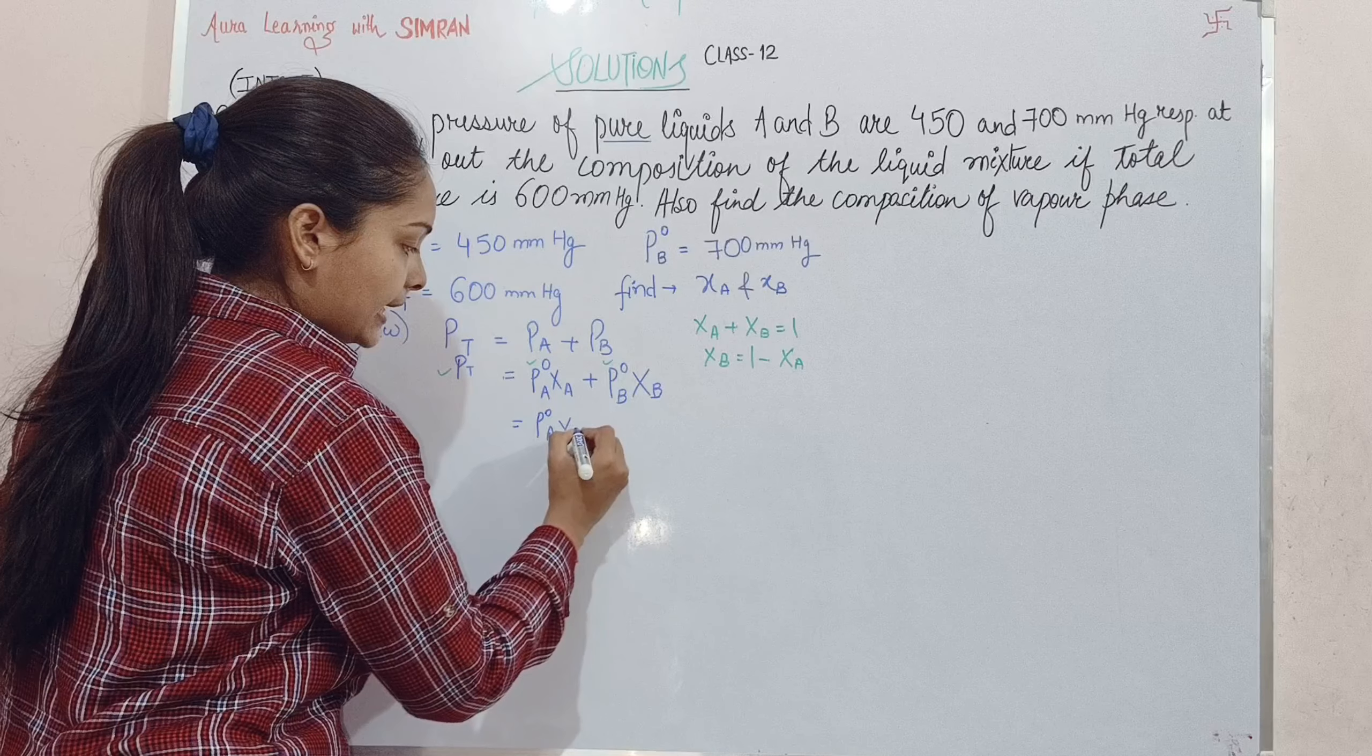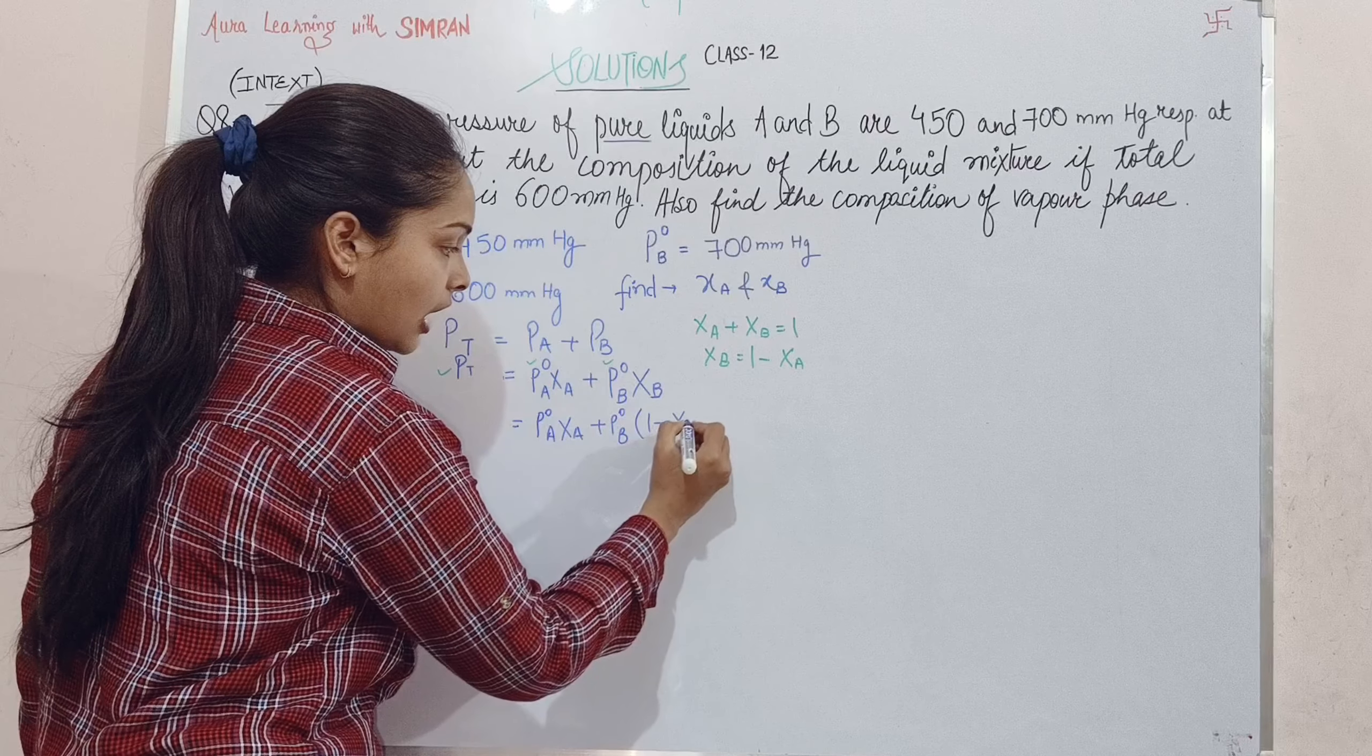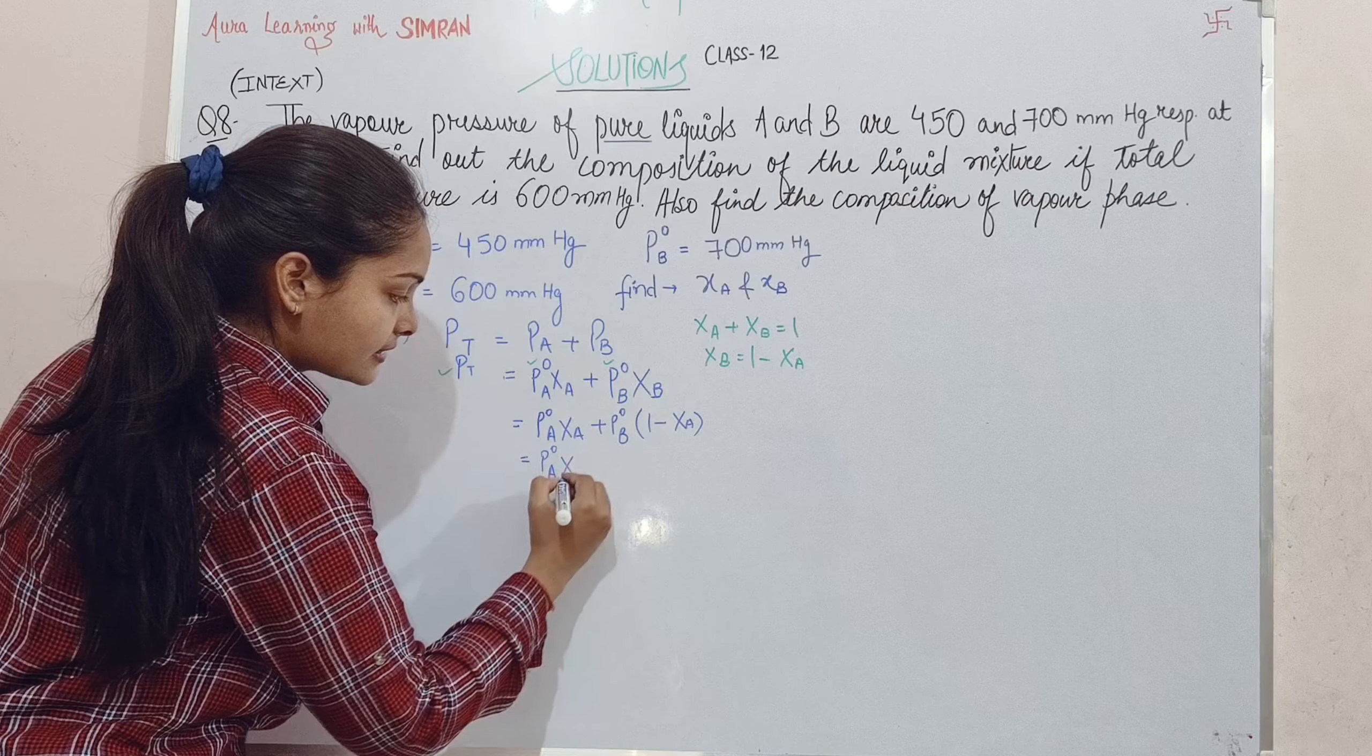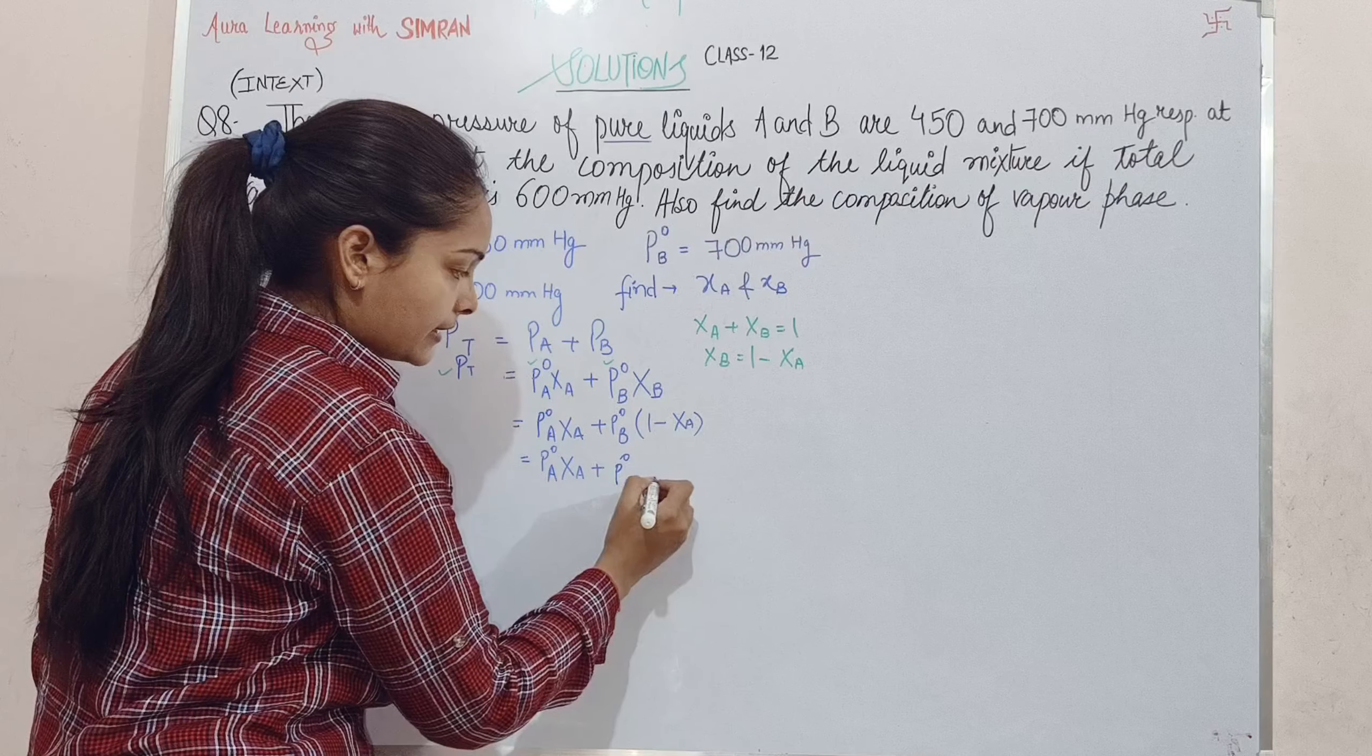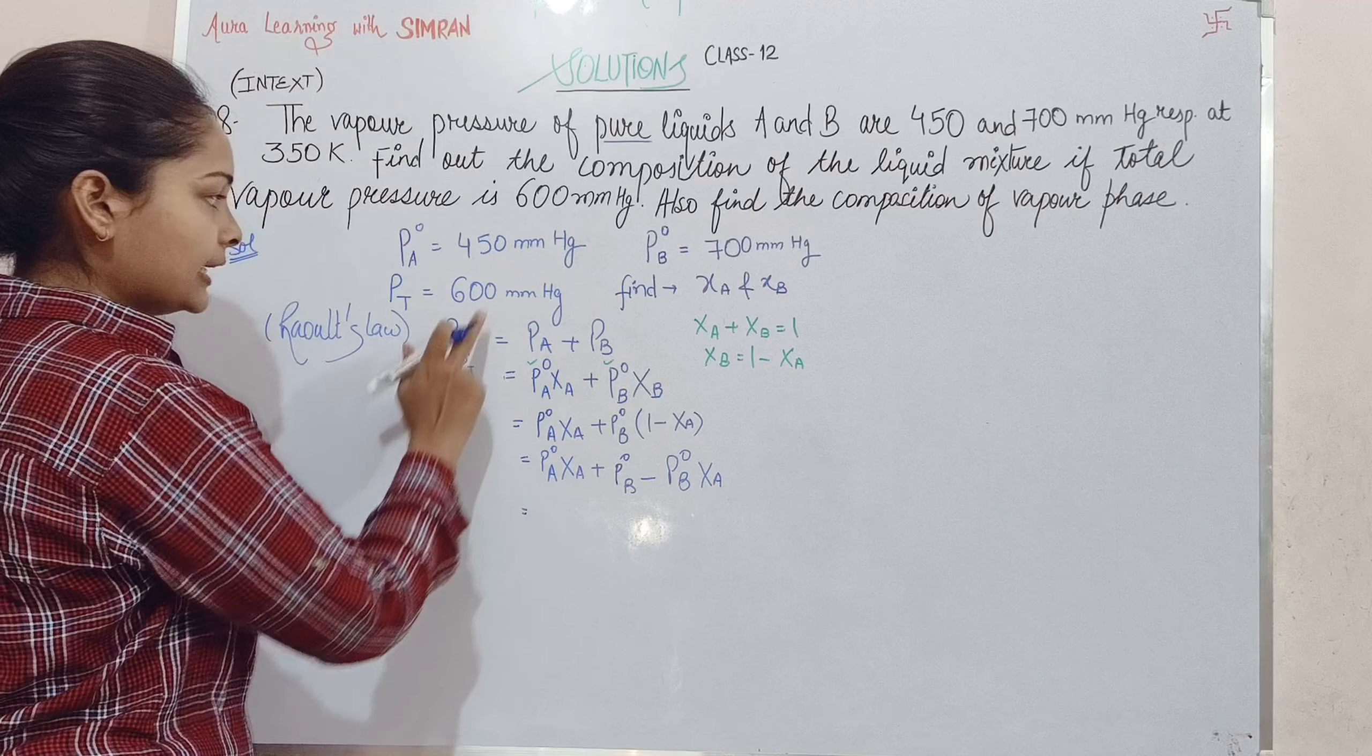Pt = P°A·χA + P°B·(1 - χA). Expanding: P°A·χA + P°B - P°B·χA. Pt value is 600.